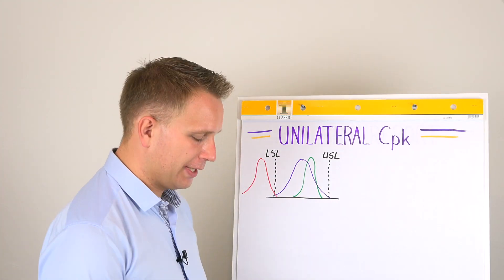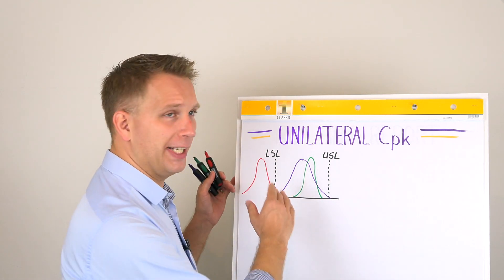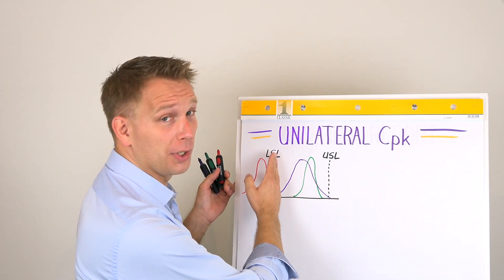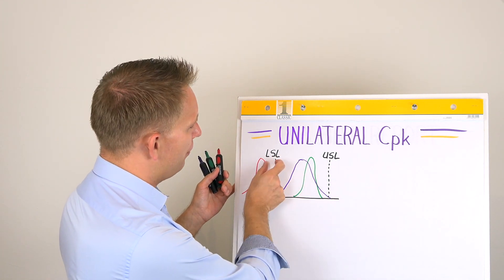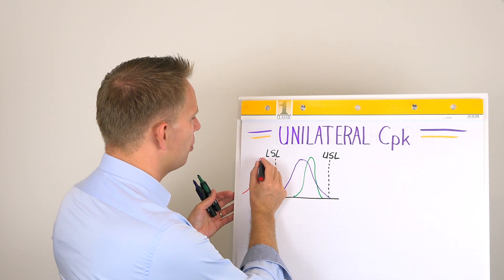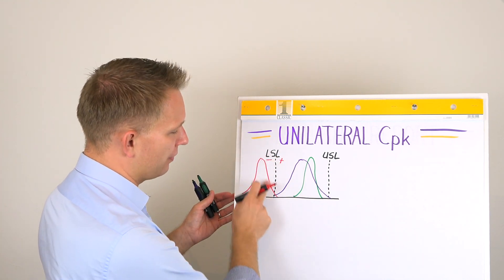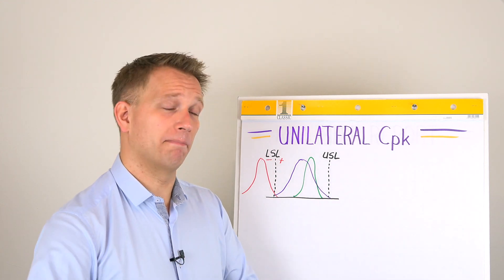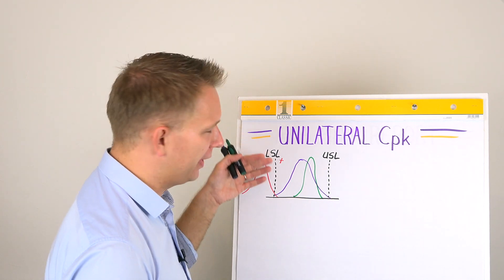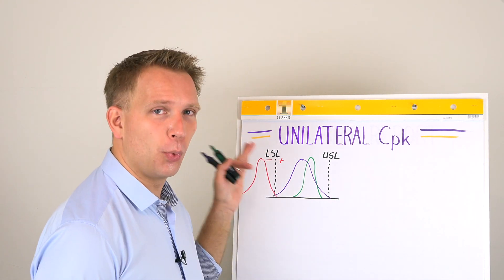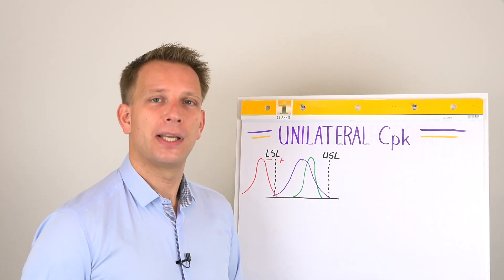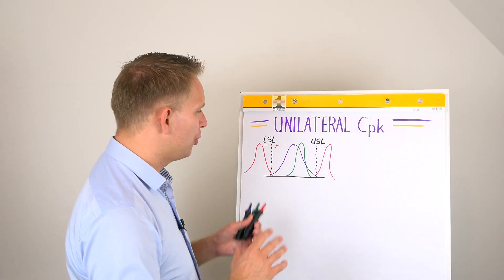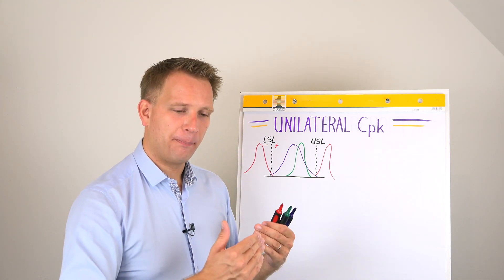What happens here — and this is maybe a bit counterintuitive — the CPK checks how far it is from the closest limit. The lower specification limit is closer, but because the process is on the wrong side, it becomes a minus. So this is roughly minus 1 CPK. When the mean is on the wrong side of the specification limits, the CPK will become negative.